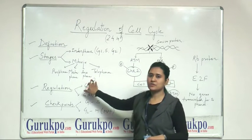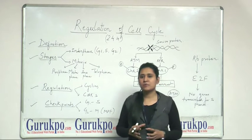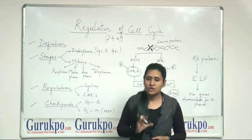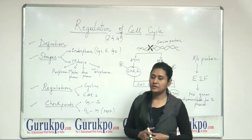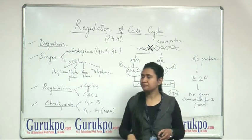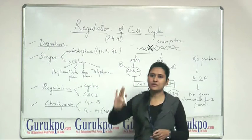In telophase, the daughter cells are being formed and the Golgi body, ER, they all will reappear and the nuclear membrane will reappear. So, that one cell will divide into two cells. This is the process of mitosis.